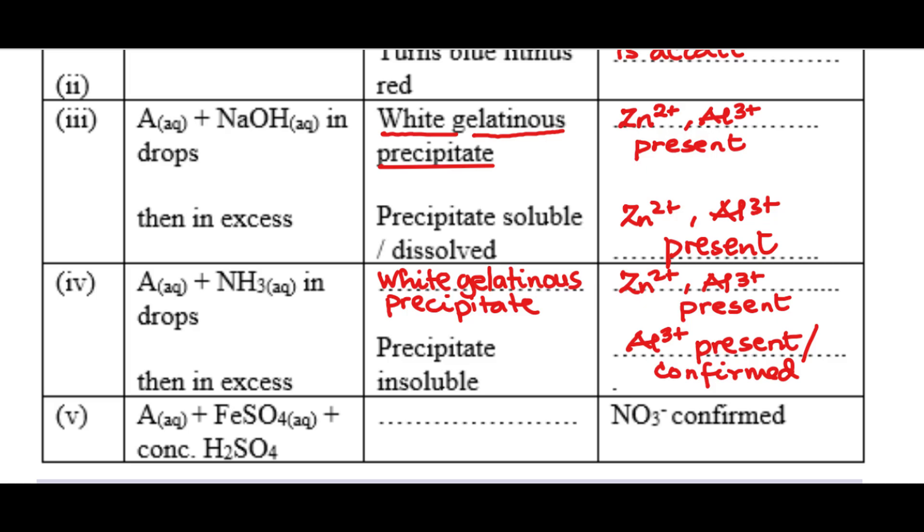It says aqueous solution of A plus aqueous FeSO4 plus concentrated H2SO4. If you watch the last video we uploaded, you'll notice that wherever you have freshly prepared iron 2 tetraoxosulfate 6 and concentrated H2SO4 as the reagents to be used for testing ions, the ion that will be tested for or that is being tested for will be trioxonitrate 5 ion, which is what is stated here under inference. It means that the anion that is present in this aqueous solution is the trioxonitrate 5 ion. Why? Because of the aqueous iron 2 tetraoxosulfate 6 and concentrated H2SO4 that were used.